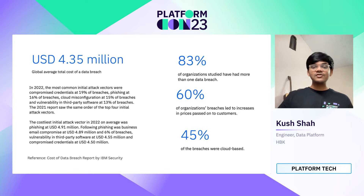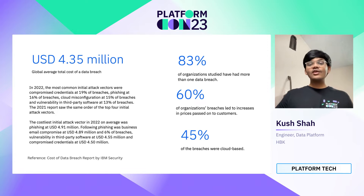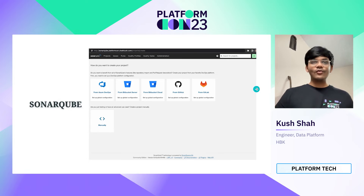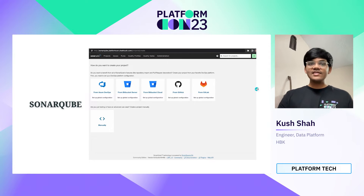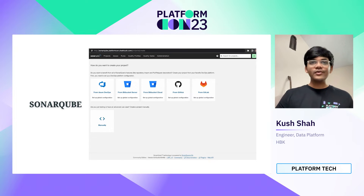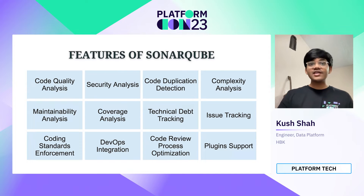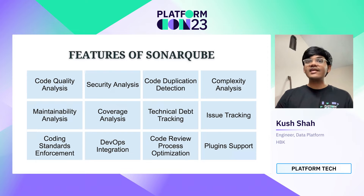There are a lot of challenges we face when it comes to maintaining code quality and security, but there are tools and processes we can use to make our lives easier. One such tool is SonarQube — it analyzes your code for bugs, vulnerabilities, and maintainability issues to help improve overall quality. It provides features like code quality analysis, security analysis, code duplication detection, maintainability analysis, code coverage analysis, technical debt tracking, issue tracking, and support for various plugins.